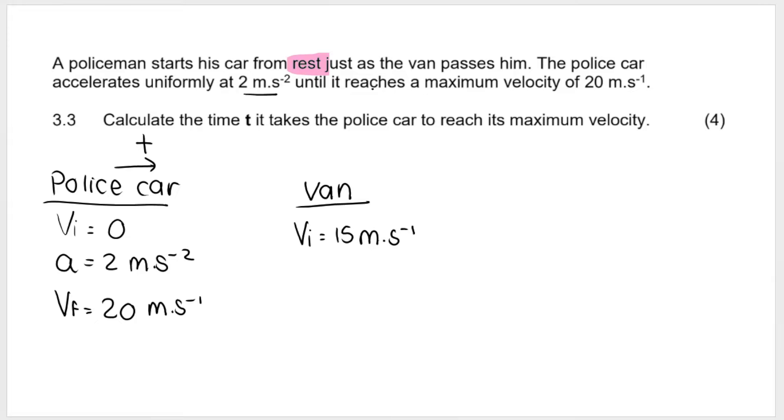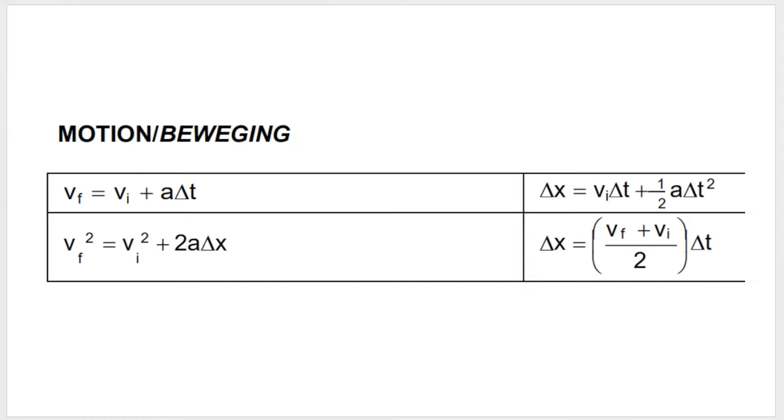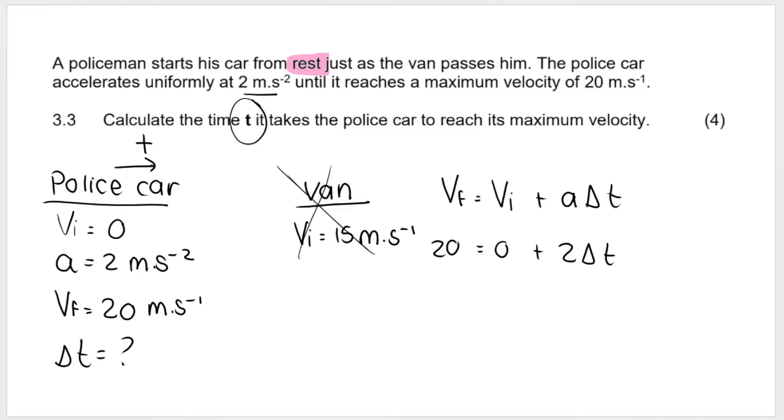3.3 wants the time it takes for the police car to reach its maximum velocity. So we're not caring about the van at the moment, we want the car. So remember, in previous videos we've done this, we're looking for time and we have three variables. You must always have three out of the four variables and you're looking for the fourth, which in this case is time. So the equation of motion that I'm going to choose that makes the most sense for me is this one, because I have that, I have that, I have that, and I'm looking for time. So they are quite generous in this paper because they give you a formula mark, substitution on the left, substitution on the right, and then you solve for time. So it's 20 equals 2 multiplied by time, and then you divide 20 by 2, you get 10 seconds. Final answer with units.